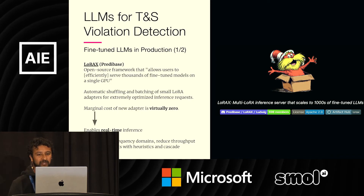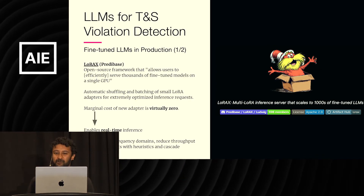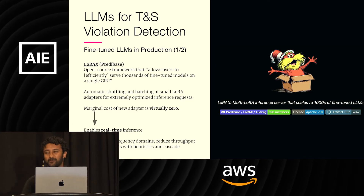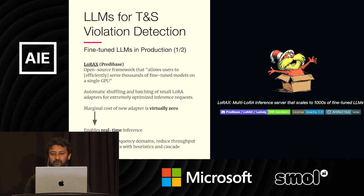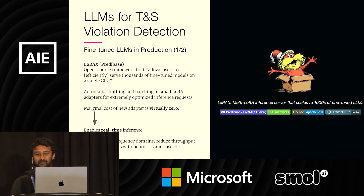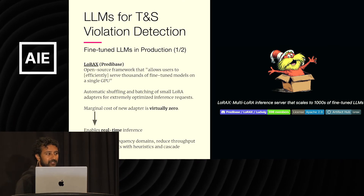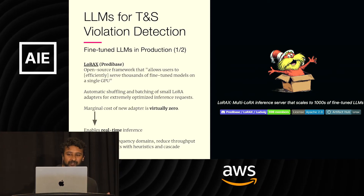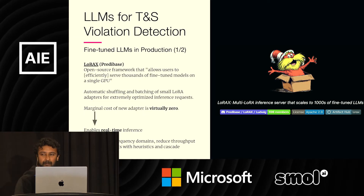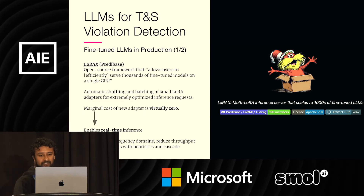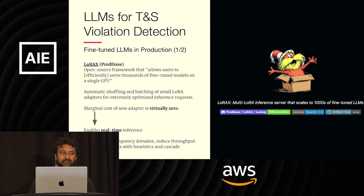In production, we use LoRaX, which is an open source framework that allows users to efficiently serve thousands of fine-tuned models on a single GPU. It exploits the fact that a fine-tuned LoRA adapter is only a few megabytes in size. Many adapters can be efficiently served jointly by simply shuffling and batching adapters and requests. In practice, the marginal cost of serving a new adapter on the same base model is virtually zero. This means we can train adapters for the many different types of trust and safety violations — hate speech, promotion, catfishing, pig butchering scams — and serve all those adapters on one or a small set of GPUs without needing to worry about horizontal scaling. Incorporating a new adapter in production is as simple as storing the megabytes of weights on some file system and modifying a request to the LoRaX client. Special thanks to the Predibase team who've developed and maintained LoRaX.